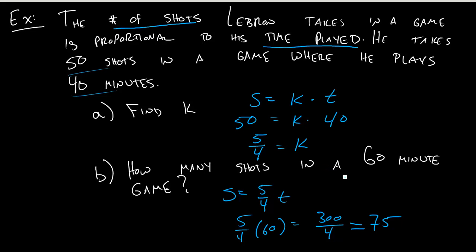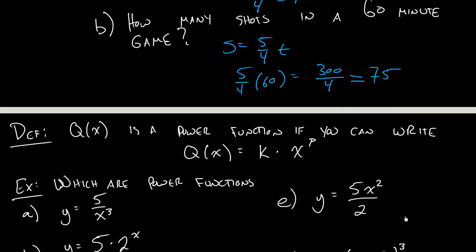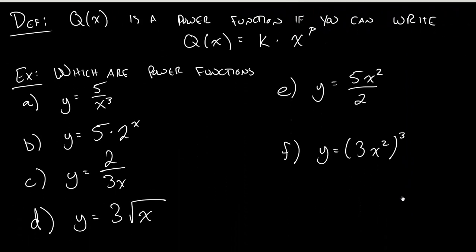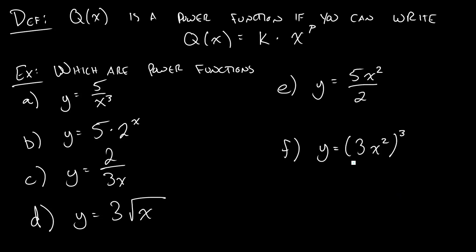So let's get to the real crux of this section, and that's going to be with power functions. But we need to introduce that word proportional first so we can do some of the word problems that come with it. We're going to say Q of X is a power function if you can write our function is equal to K times X to the P. So notice what we're saying is our output Y here is proportional to X to the P, X to the P power.